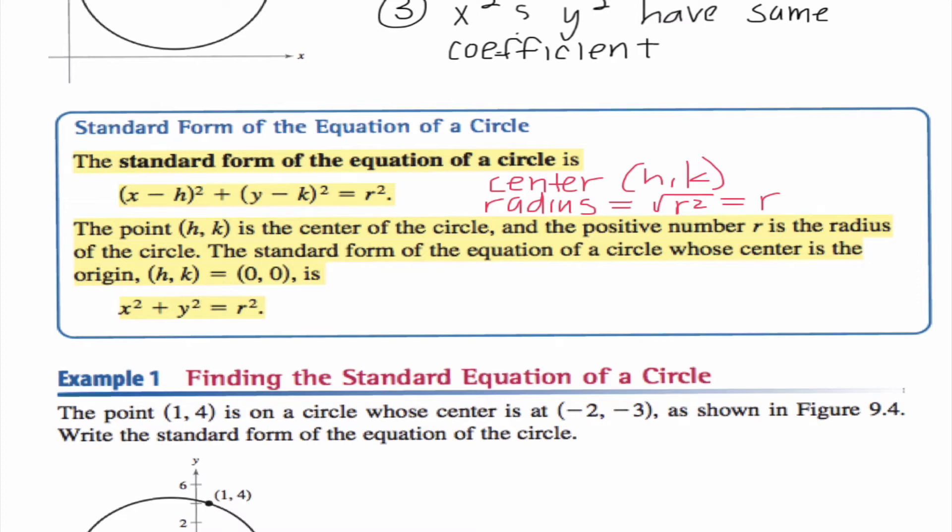Just a quick note, the reason why we just do the square root and not plus or minus square root is because we know the radius is a distance, it's a length, so it has to be positive. So a negative radius does not exist. These are the only values that we will see numbers for. X and y will be variables in every single equation.